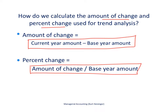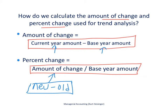I've often heard people describe this as 'new minus old.' So that's the current year amount minus the base year amount — the new information minus the old information — that's how to find the amount of change. Then divide that by the old, or the base year amount. So it's new minus old divided by old, or the amount of change divided by the base year amount.